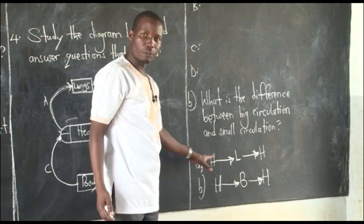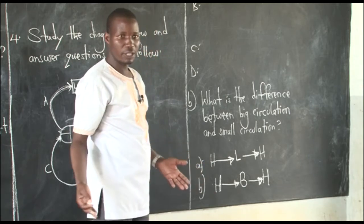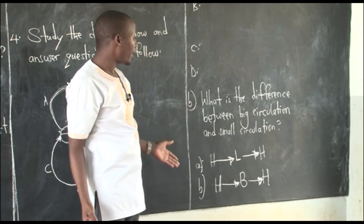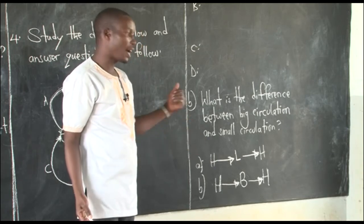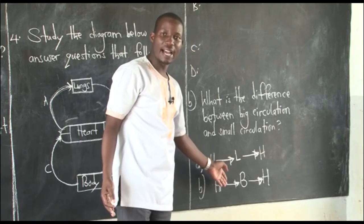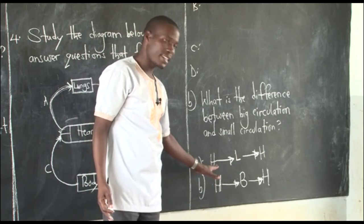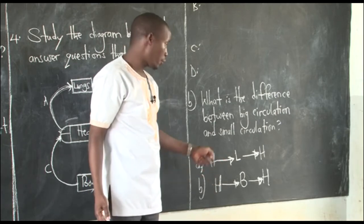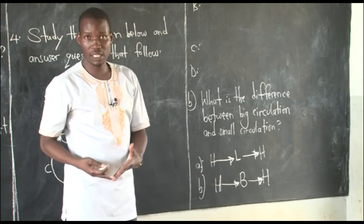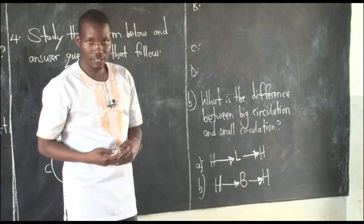You can now define the two types of circulation. Simply say: small circulation is the movement of blood from the heart to the lungs and back to the heart, while big circulation is the movement of blood from the heart to all body parts and back to the heart. You can be asked to mention the two types of blood circulation — the small circulation and the big circulation.